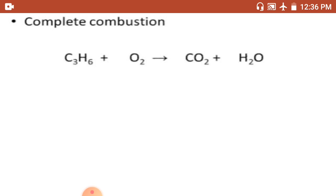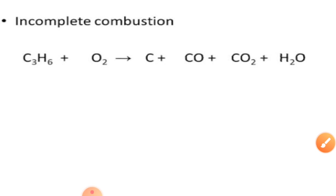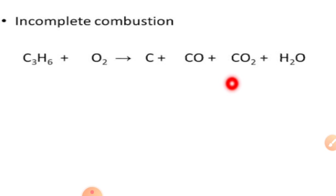Incomplete combustion occurs when the combustion reaction takes place in the presence of an insufficient quantity of oxygen, so the fuel is not totally burned. For example, when propane burns with insufficient oxygen, it is not completely burned.